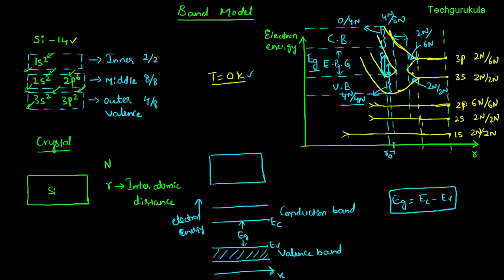For example, for silicon: at T = 0 K, the energy gap is 1.21 electron volt, and at 300 K it is 1.1 electron volt. For germanium: at T = 0 K the energy gap is 0.74 electron volt, and at 300 K it is 0.66 electron volt.